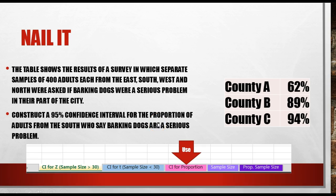Okay. Here's another question. Let's take a look at this. The table shows the results of a survey in which separate samples of 400 adults each from the east, south, west, and north were asked if barking dogs were a serious problem in their part of the city. Construct a 95% confidence interval for the proportion of adults from the south who say barking dogs are a serious problem. We're going to be using the CI for proportion again.